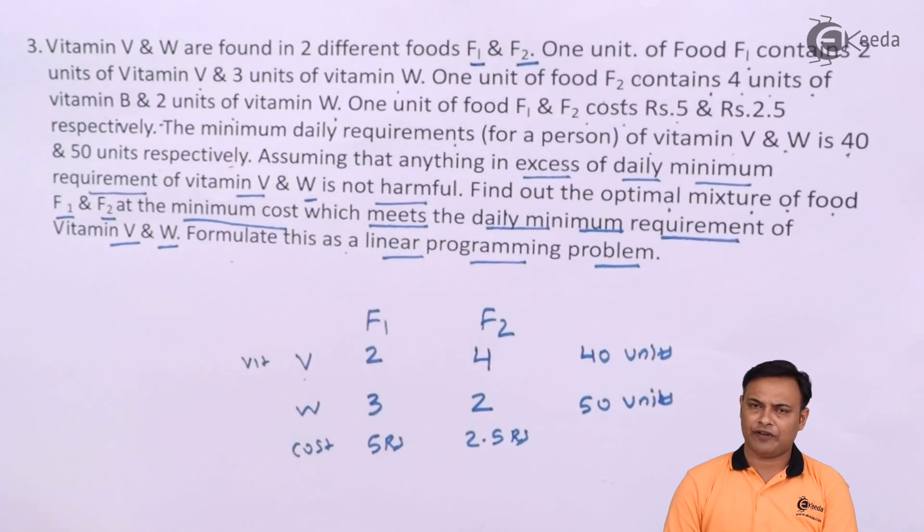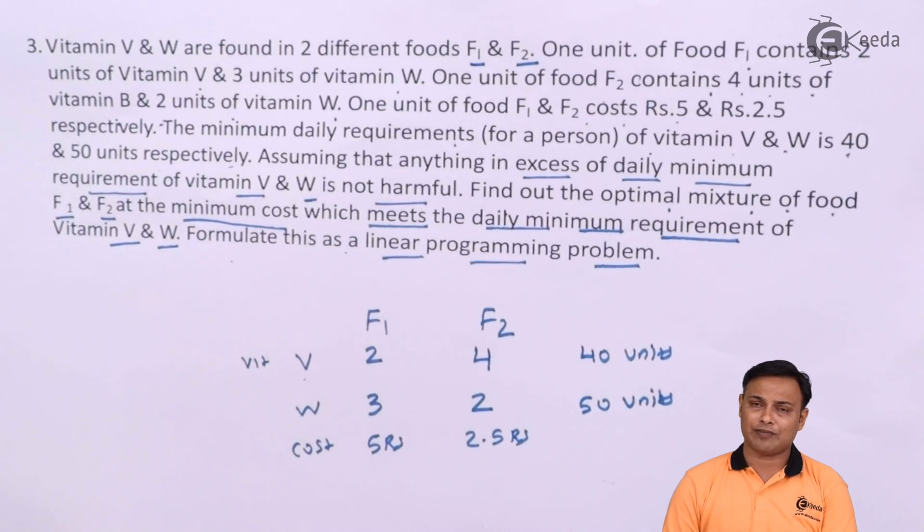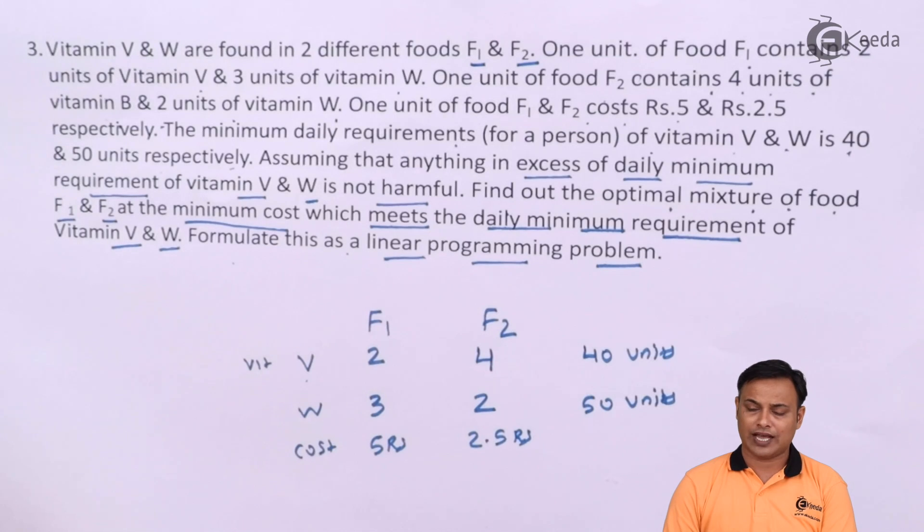In case we are given the profit, in case we are given the sales, in case we are given the contribution per unit, we basically try to maximize it. But in this case, it shall be minimized. Now, let's try to formulate this as a linear programming problem.